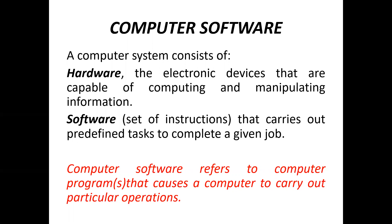We need to understand what exactly hardware is and what exactly software is. A computer system is a combination of software and hardware. Hardware refers to those electronic devices that are capable of computing and manipulating information. Software is the set of instructions that carry out predefined tasks to complete a job — that set of instructions is called software. So a computer is a composition of software and hardware.